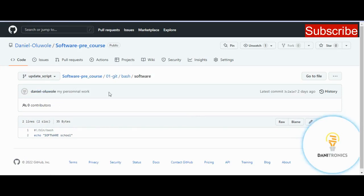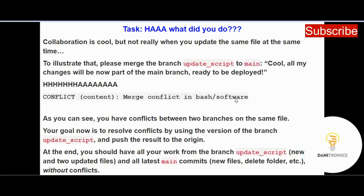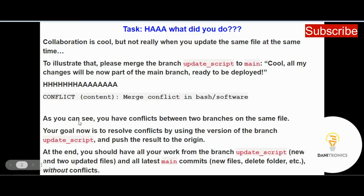Now the next thing we want to do is what the question is telling us — merge those conflicts. The content of the software file in the master branch is different from the content of the software file in the update_scripts branch. We are done experimenting and now we want to merge everything into the master branch so it can be deployed. As the task states: you have conflicts between two branches on the same file.